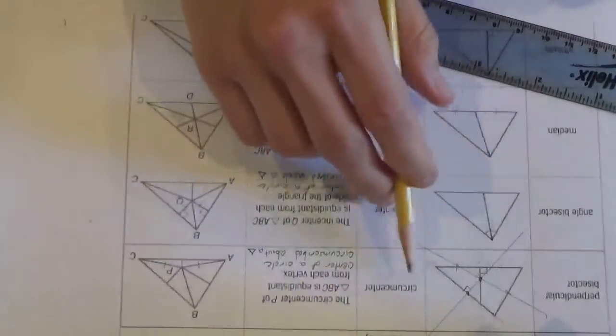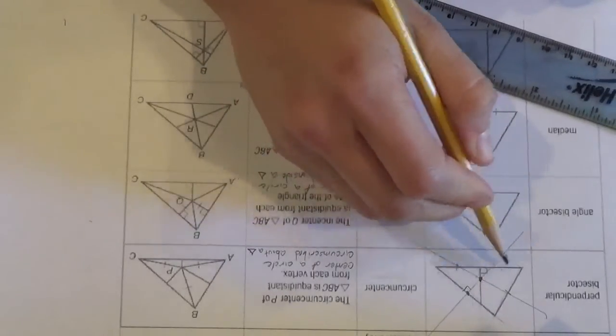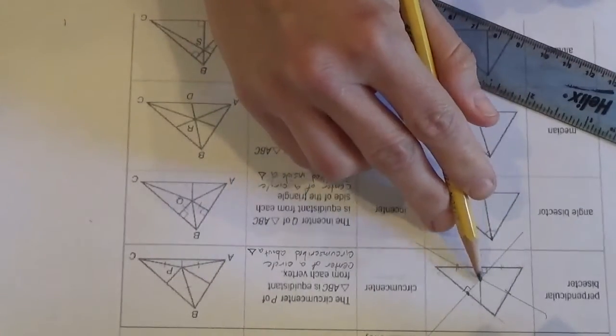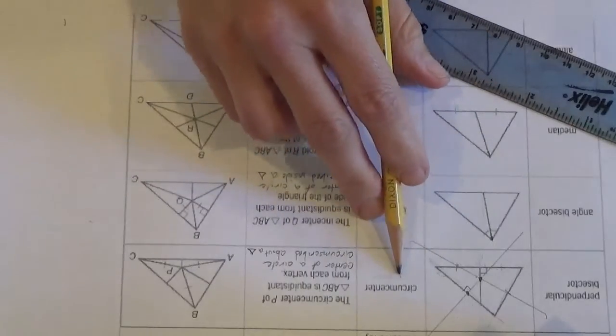We call it a, these are points of concurrence, concurrency, where they bisect. So this is called the circumcenter...